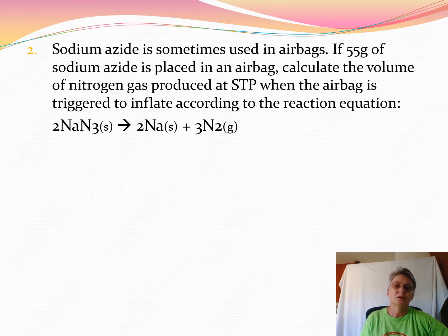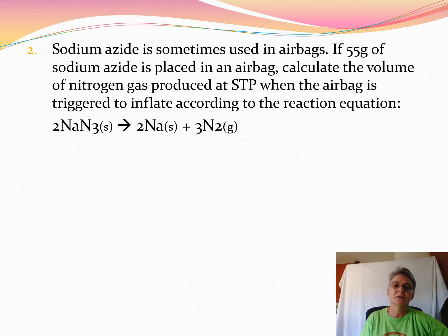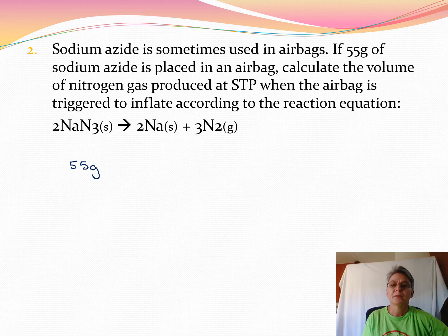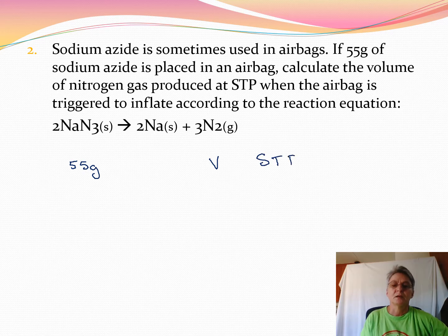Next, we go to sodium azide, which is used in airbags. They say we start off with 55 grams of sodium azide. They want us to calculate the volume of nitrogen at STP. We need the mole ratio.